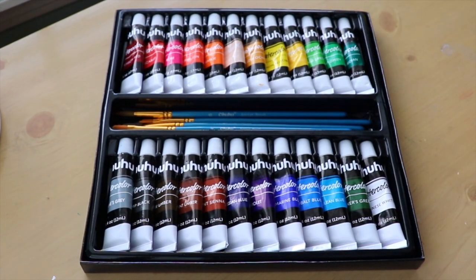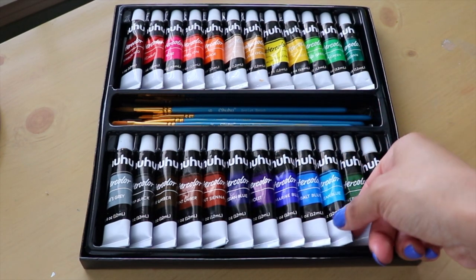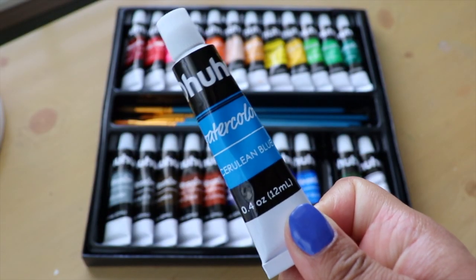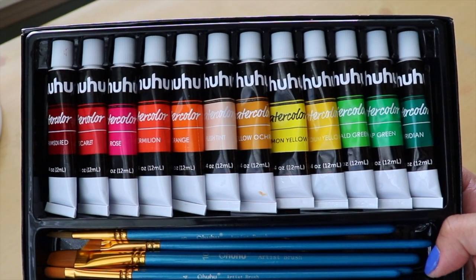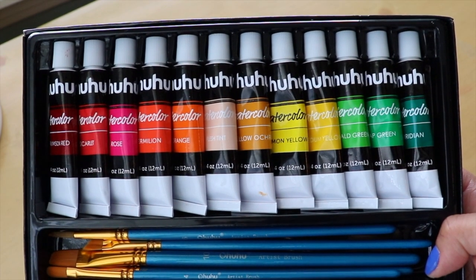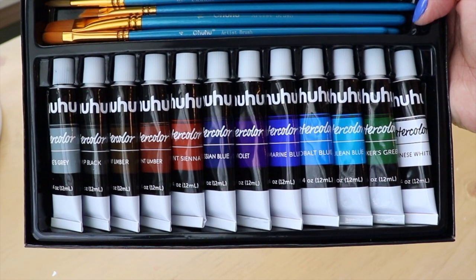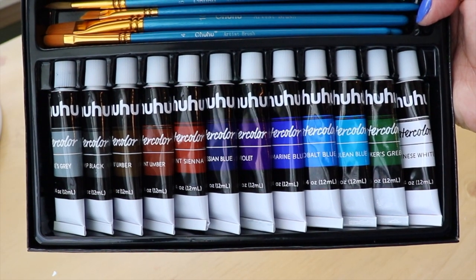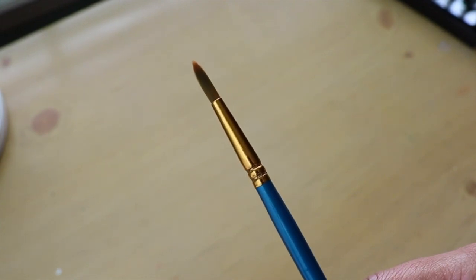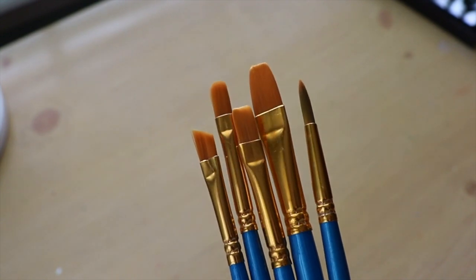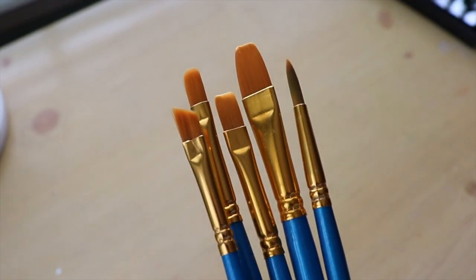Last but certainly not least, we have the watercolor paints and the brushes that all came in a set. With each tube of paint being 12ml, I think that is more than enough paint for someone who is just starting out and wanting to experiment with the medium. Most of the colors are quite vibrant, and while painting with it, I found that blending colors together was pretty easy. As for the brushes, I personally would only use one of them for watercolor paints, but I am not opposed to using the other brushes with another medium like gouache. So all in all, I would recommend this set to beginners.